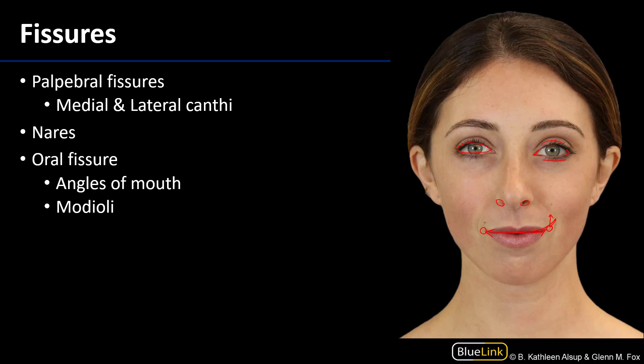If we pull that modiolus inferiorly and laterally, then we have a frown. If we pull that modiolus laterally, then we have a smirk.